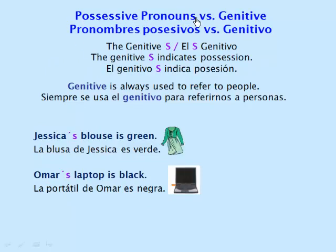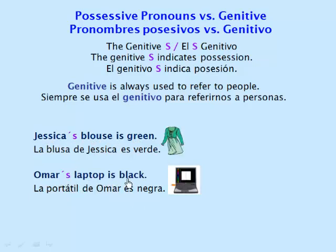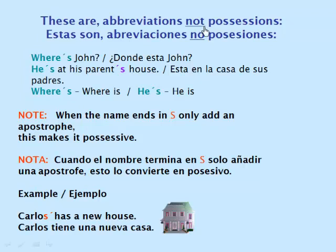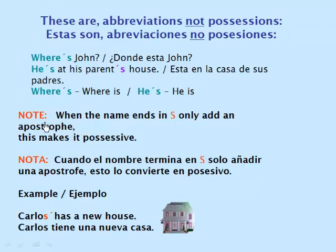Possessive pronoun versus genitive. The genitive 's indicates possession. Genitive is always used to refer to people. Jessica's blouse is green. Omar's laptop is black. Note: these are abbreviations, not possessions — 'where's' means 'where is,' and 'he's' means 'he is.' When the name ends in S, only add an apostrophe to make it possessive. Carlos' house is a new house.